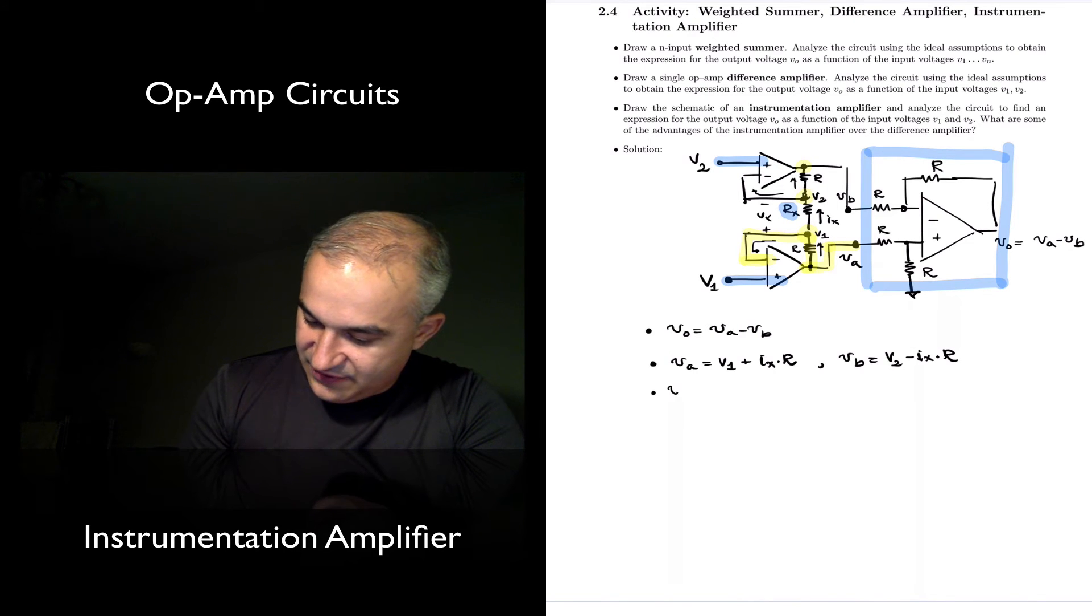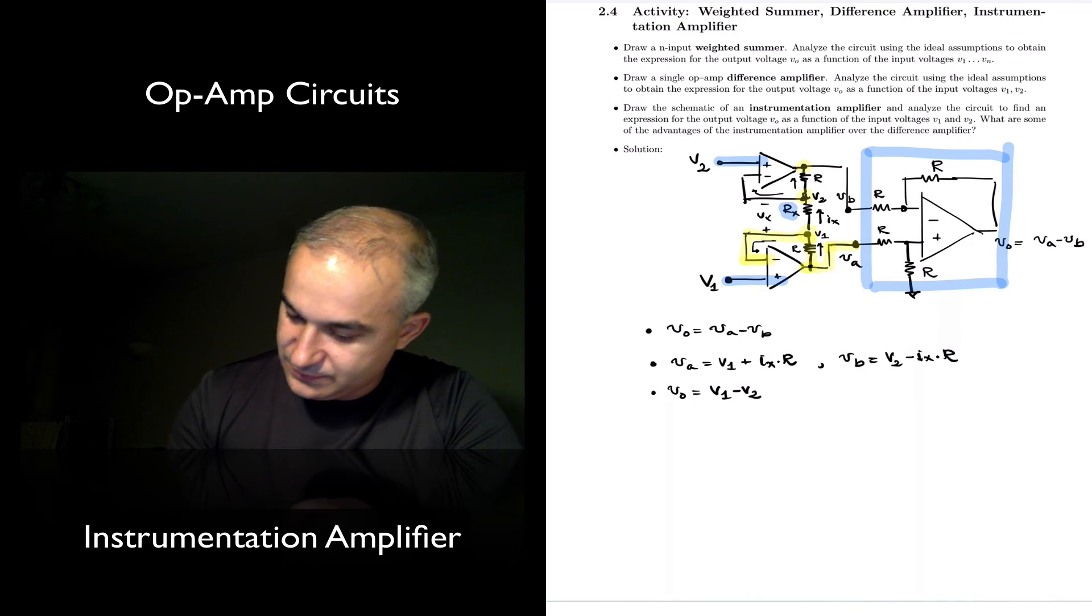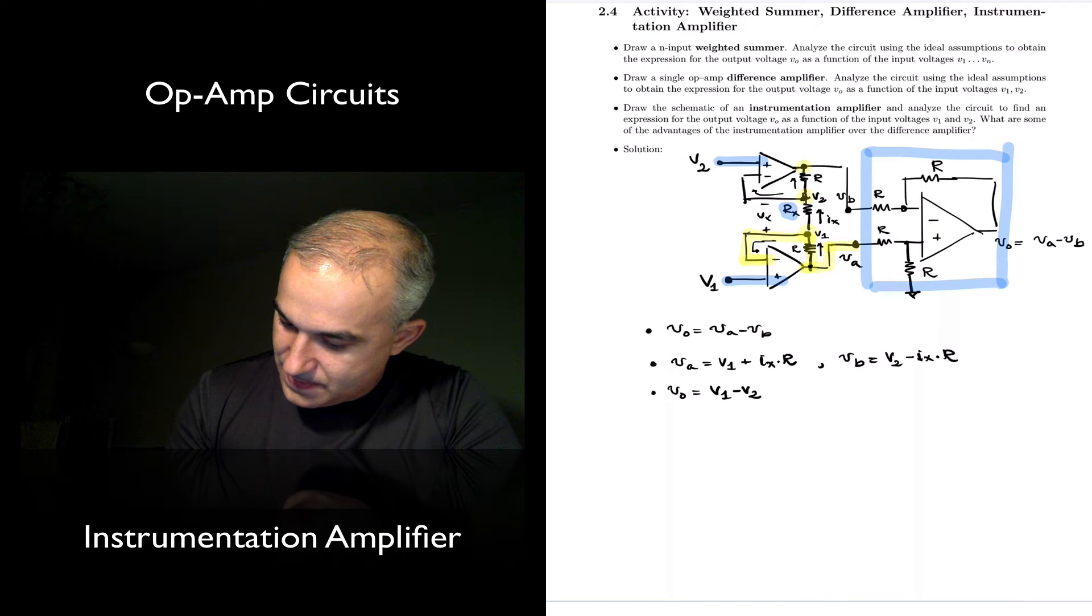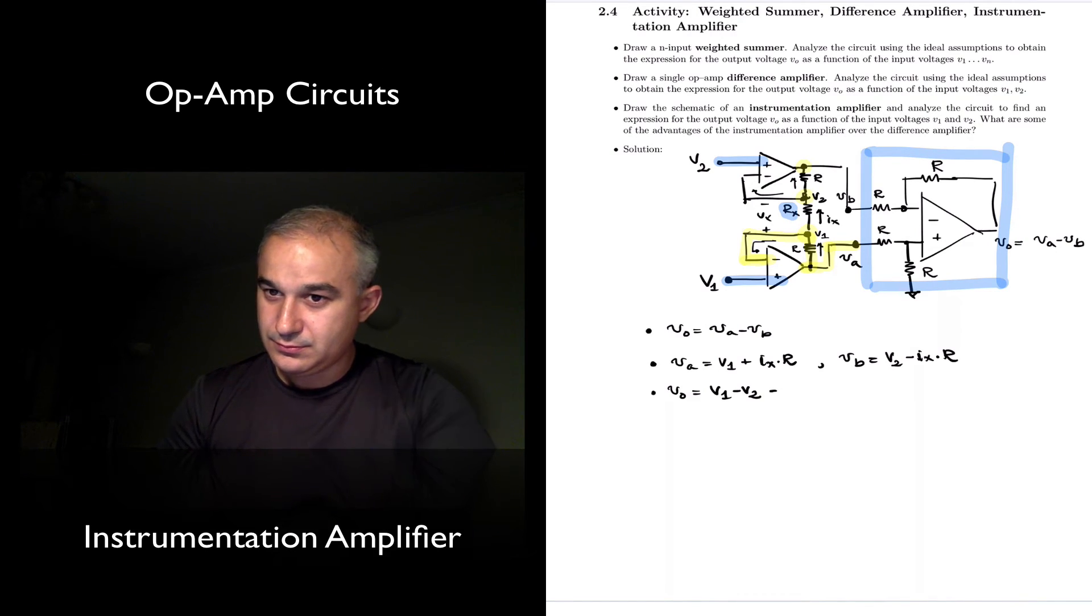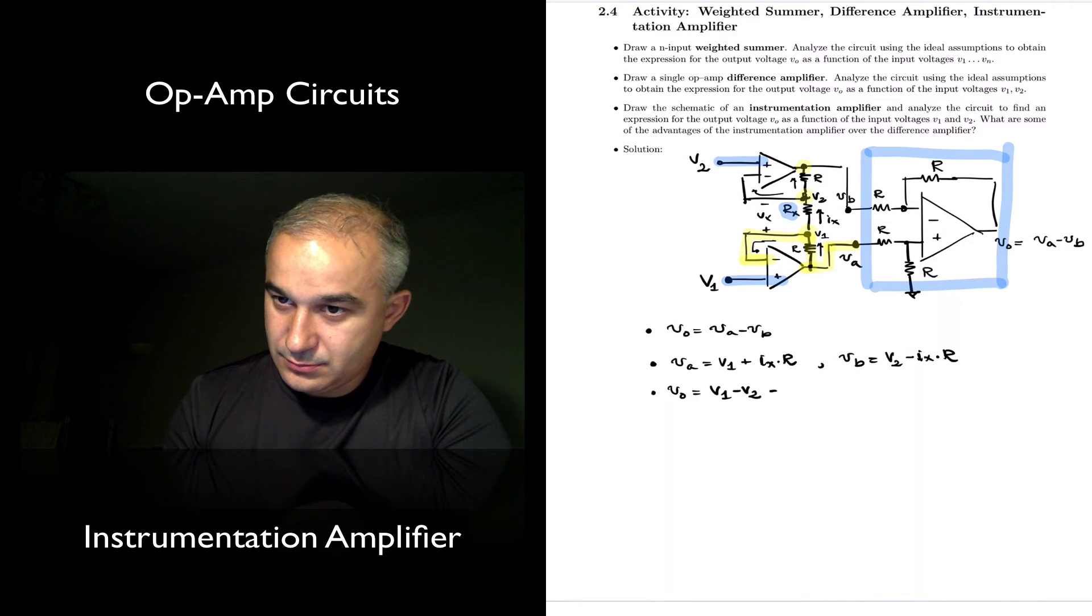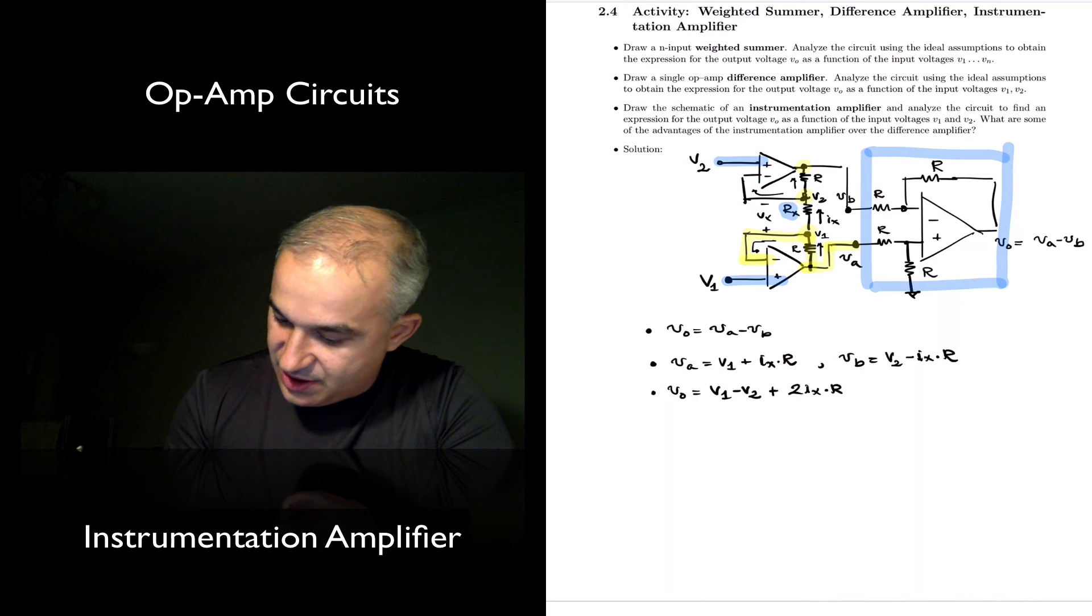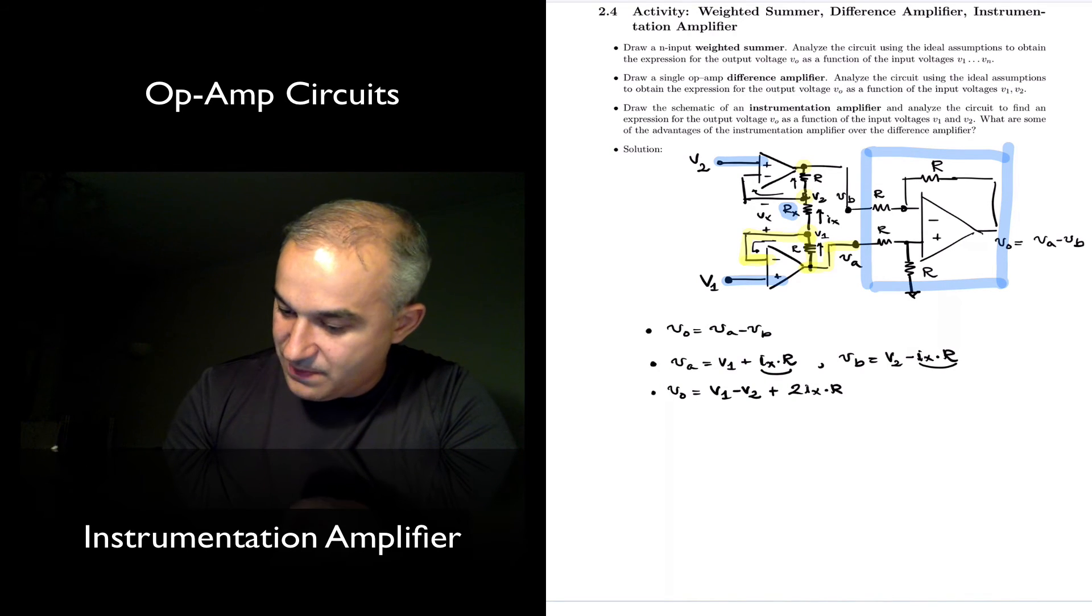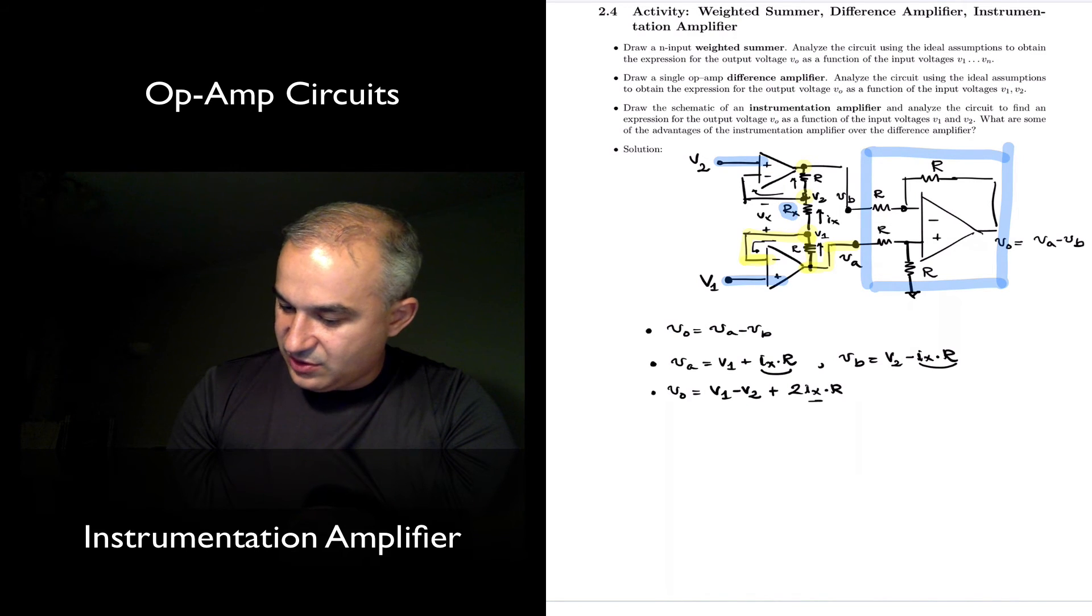And so with that, we have the V output is equal to V1 minus V2, so I'm just plugging this in, minus... and actually plus, right? This 2 Ix times R. So we have this R Ix times R and this one minus minus makes a plus, and so we got it. Okay, that's fine, but all this is depending on this Ix.